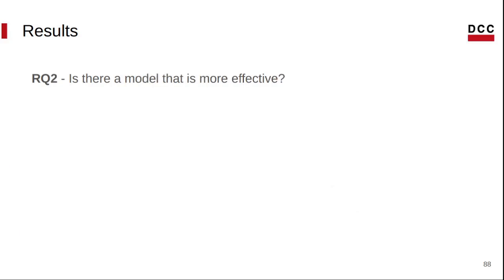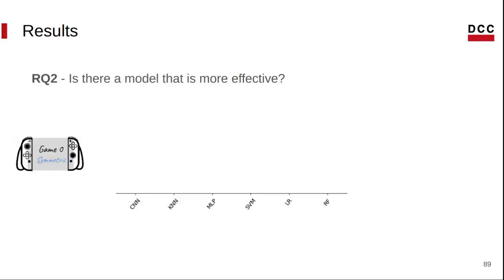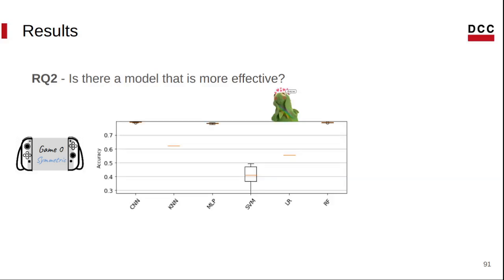Let me show you results for another research question. We want to compare different models to see which one better uses the embeddings that we have. That's what we call game 0 — classifiers and evaders use the same programs without transformation. We have 6 different learning models, which are typical stochastic classification models, and again we are reporting accuracy. Using histograms as the program representation, we got something between 40 and 80 percent accuracy with different models — much more than the 1 percent of random classification. Random forests were consistently better across our different games.